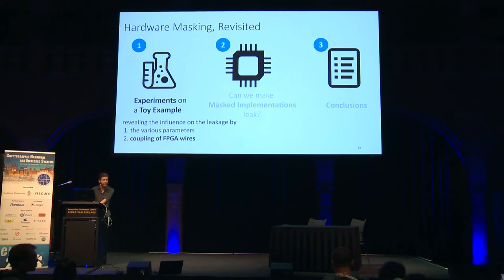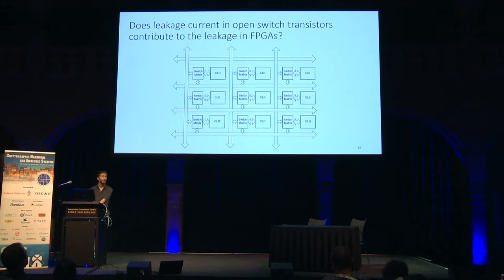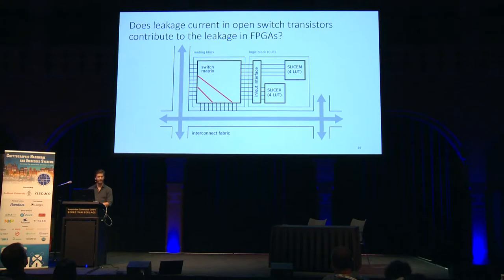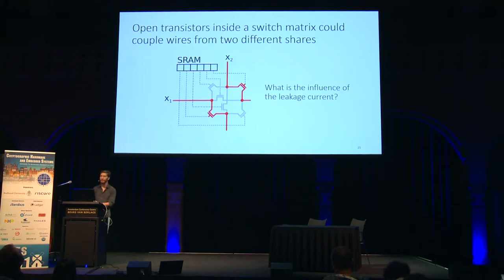That covers those parameters. Since we're working on an FPGA — where wires consume quite a lot of power compared to ASIC — we also investigate coupling between wiring. We look at the structure of an FPGA: a regular pattern of lookup tables wired together through switch matrices. It's reasonable to assume these switch matrices consist of transistors configured as open or closed switches depending on the bitstream stored in SRAM.